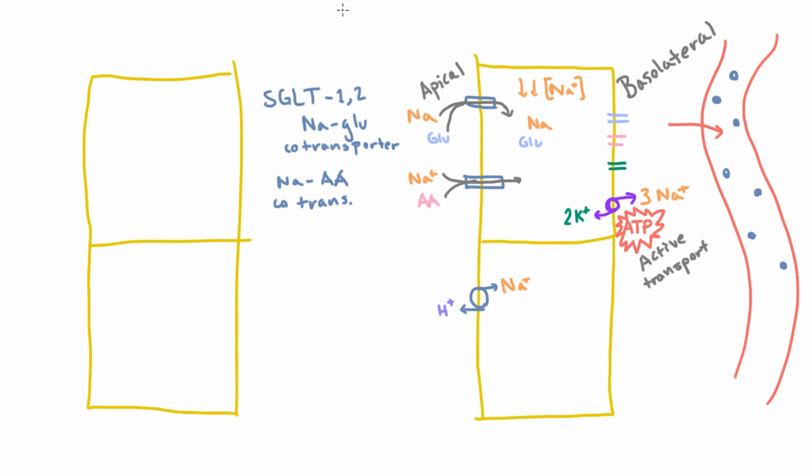And there are actually two and they're both here in the kidney. One and two. So SGLT1 and SGLT2. And then the thing that lets glucose diffuse out of the basolateral side is called a glucose transporter. So it's GLUT and it happens to be number two. So glucose transporter number two.